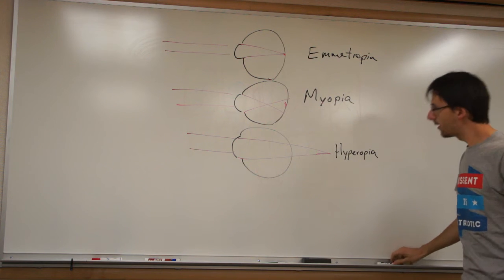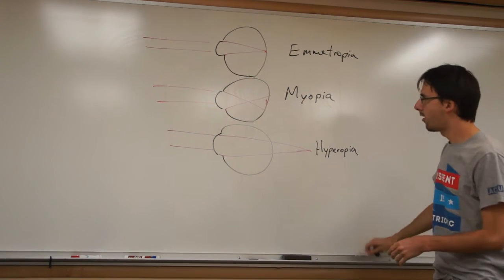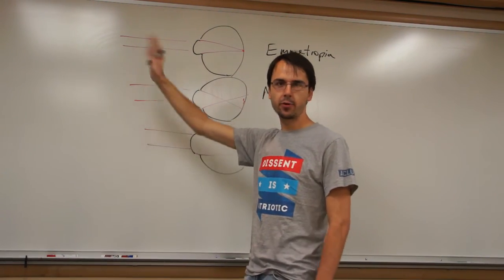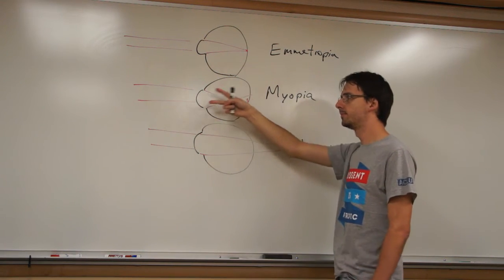And the reason we call myopia nearsightedness is that it turns out that objects that are infinitely far away, the further away they are, rays coming from that object will be parallel, coming in parallel.